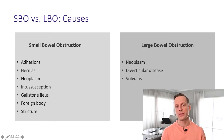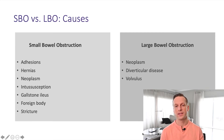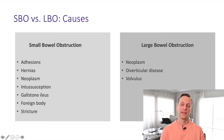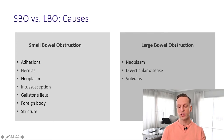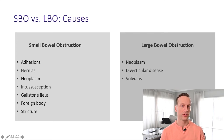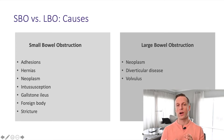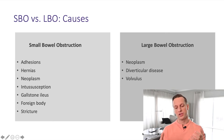For large bowel obstructions, the number one cause is neoplasm. Then we have diverticular disease and volvulus as causes. Looking at those causes, really all three are going to require some kind of surgical intervention to correct.